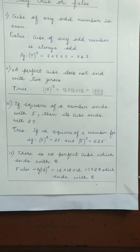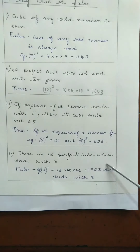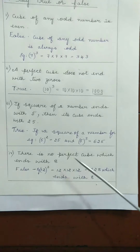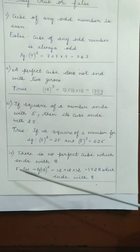Next is the fourth statement: 'There is no perfect cube which ends with 8.' We will check whether this statement is correct or wrong. For example, let us consider the number 12. So 12 cube — 12 into 12 into 12 — is equal to 1728. This is a perfect cube which ends with 8. Therefore the given statement is false, because there is a perfect cube that can end with 8. The correct statement is: there is a perfect cube that can end with 8.